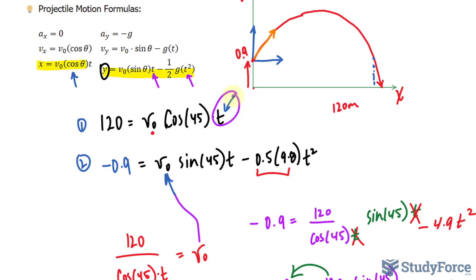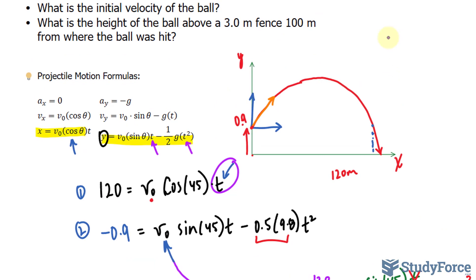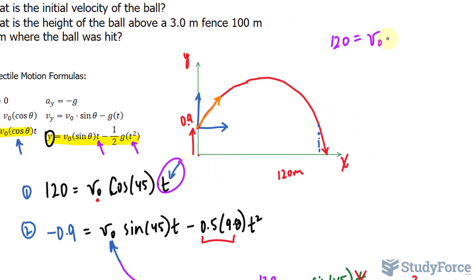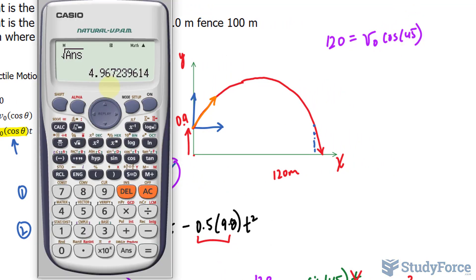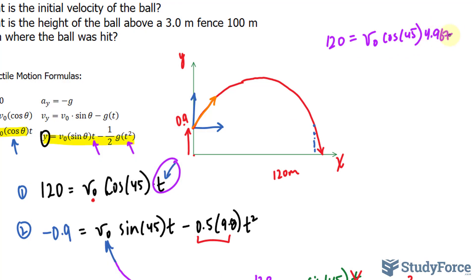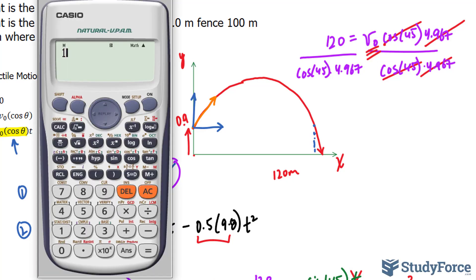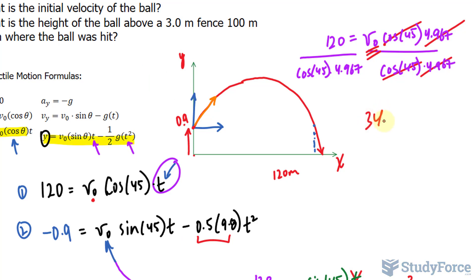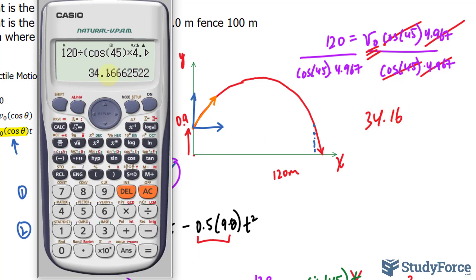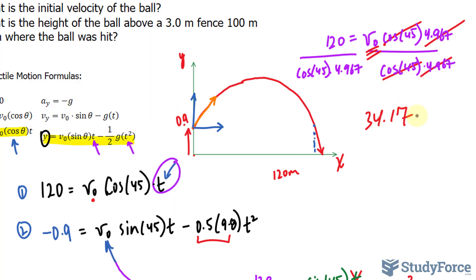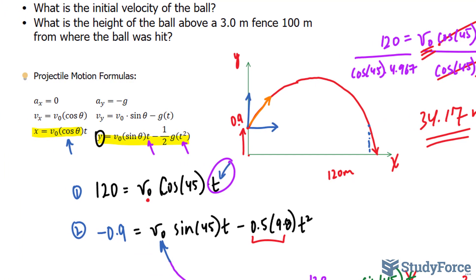We will take that value and substitute it right into there and then solve for v sub 0 or v initial. I'll show you my work over here. 120 is equal to v initial times cosine 45 times the value we found, 4.967. We divide both sides by cosine 45 times 4.967. That again on the left side. And that cancel out and we have v initial on the right side. 120 over bracket cosine 45 times 4.967. We get 34.16. And, if you want the correct number of significant figures rounded to 2, it should be 34.17 meters per second. That's the initial speed. And that answers the first part right there.